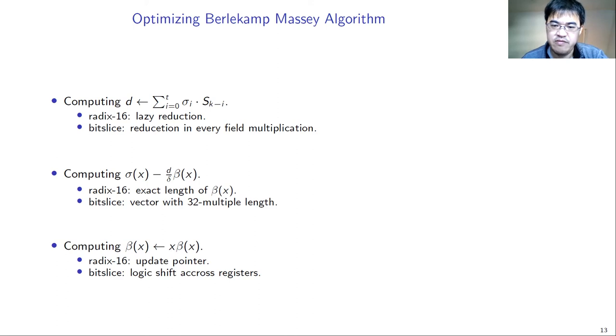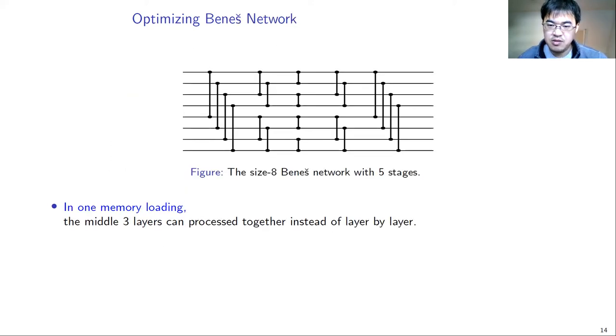When computing the vector times scalar, the red-existing can do the multiplication with exact length of polynomials. But the vector length in the bit-slice data can only be 32, 64, and so on. The bit-slice multiplication wastes computing power for multiplying unnecessary terms. When raising the degree of polynomials, red-existing can do this by changing its pointer to the high terms of polynomials. But the bit-slice data has to do the real logic shift across the registers. We think this is the reason why red-existing Berlekamp-Massey is faster than the bit-slice implementation.